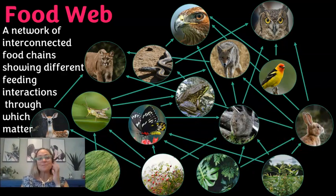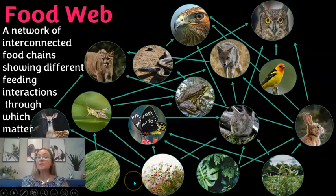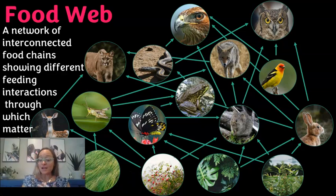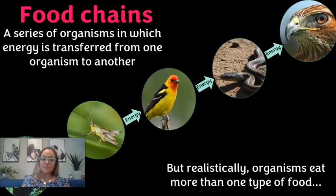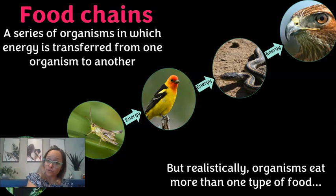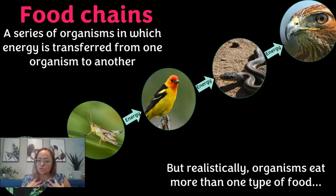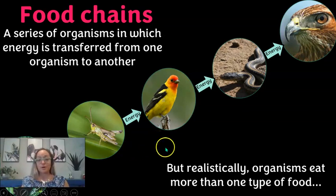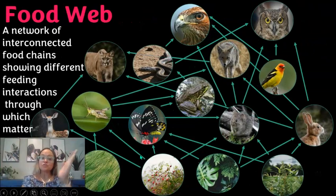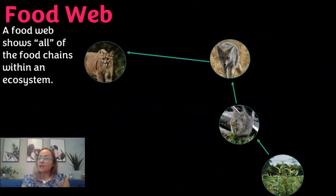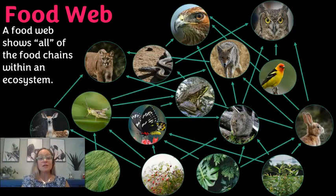A food web is a network of interconnected food chains showing different feeding interactions through which matter and energy flow. The arrows in a food web show the direction that energy flows — for example, an arrow from the grasshopper to the western tanager bird means the energy in the body tissues of the grasshopper is being provided to the bird as an energy source. It's being passed to the bird that ate it.